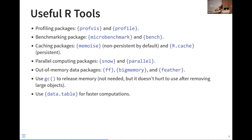Here are a couple of useful R tools. For profiling, packages like Profvis and Profile help you identify bottlenecks. For benchmarking, packages like MicroBenchmark and Bench allow you to compare the speed of your code. For caching, Memoise is non-persistent by default — what it stores is in memory and lost when you close your R session — whereas R cache is persistent by default, storing data on disk so you can load it across multiple R sessions.